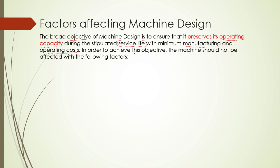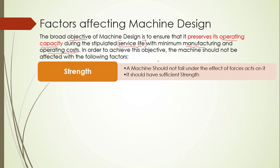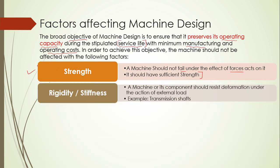What factors do we need to find? First factor: the machine should not fail under the effect of forces. If a machine is running, external forces act on it — that's why machines fail. So it should have sufficient strength. That is called strength — that is the first factor.